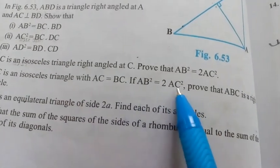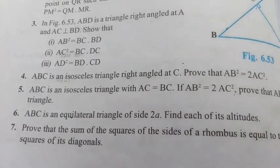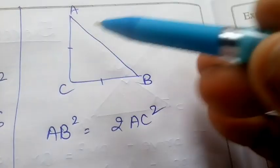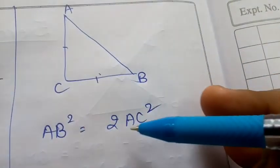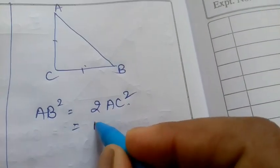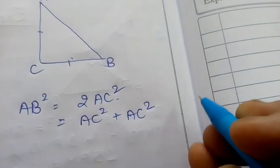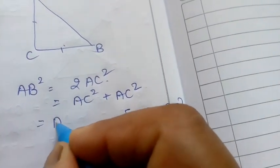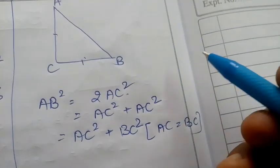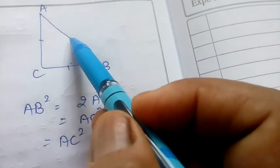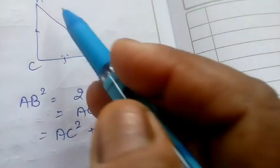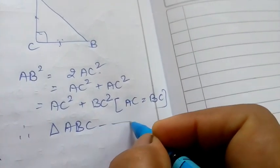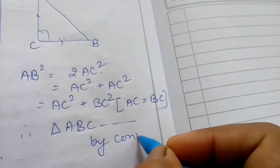Question number 5 is the converse of question number 4. Triangle ABC is an isosceles triangle with AC = BC, and AB² = 2AC² is given. We write AB² = AC² + AC² = AC² + BC² (since AC = BC). By the converse of the Pythagorean theorem, if the square of the longest side equals the sum of squares of the other two sides, the triangle is a right triangle. Therefore, triangle ABC is a right triangle.